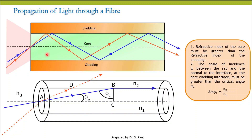As the rays undergo total internal reflection, the angle of incidence equals the angle of reflection. Since the core-cladding structure has cylindrical symmetry, total internal reflection is also evident at the opposite interface. So the ray travels forward by total internal reflection and ultimately reaches the other end of the optical fiber, emerging out of it.